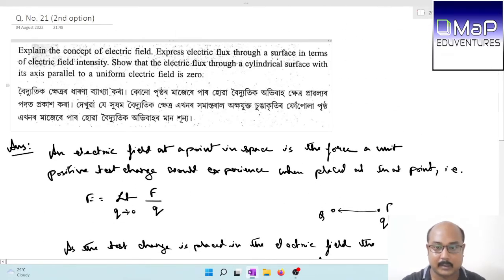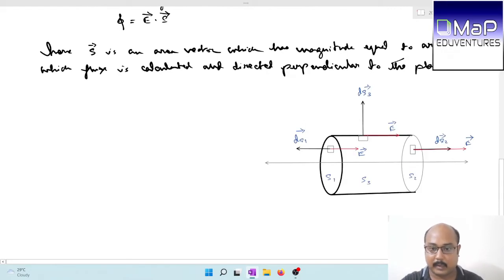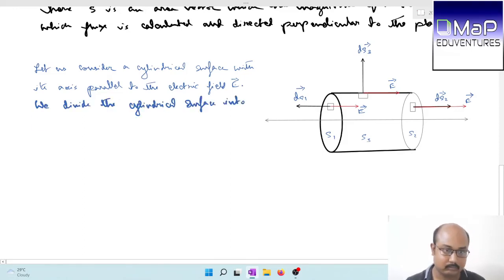The last part of the question: show that electric flux through a cylindrical surface with its axis parallel to the electric field is zero. Looking at the diagram, I take a cylindrical surface where the axis of the cylinder is along the electric field. The entire surface consists of end surfaces S1, S2, and the lateral surface S3. The surface elements are dS1, dS2, and dS3. I calculate the electric flux through S1, through S2, and through the surface S3.